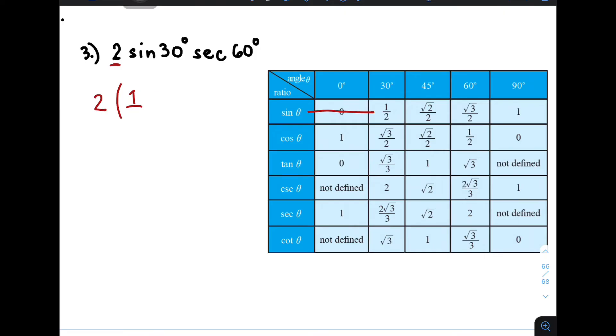Next, times 1 half times secant 60 degrees. Secant, we have here secant 60 degrees, this is it. As you can see, the value is simply 2.